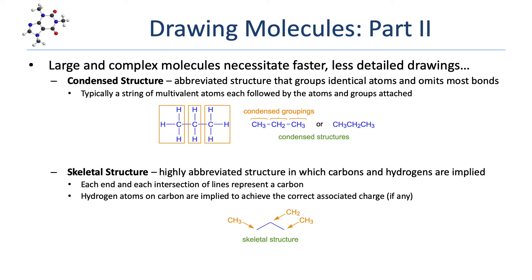The middle carbon of propane has two monovalent atoms attached — two hydrogens — so we abbreviate that as CH2. The third carbon is the same as the first: a carbon with three hydrogens, abbreviated as CH3. The bonds connecting the multivalent atoms can also be omitted, giving a fully condensed structure of CH3 CH2 CH3.